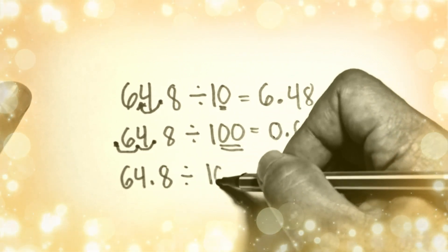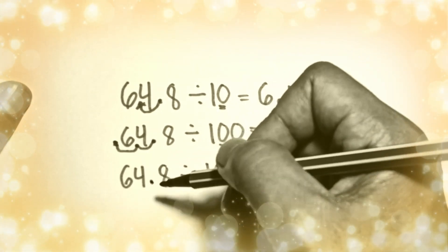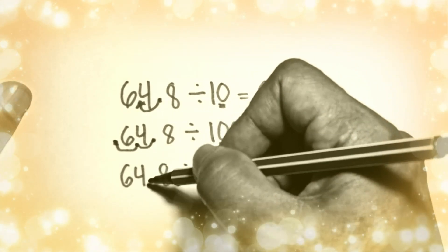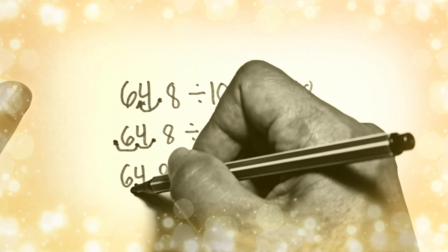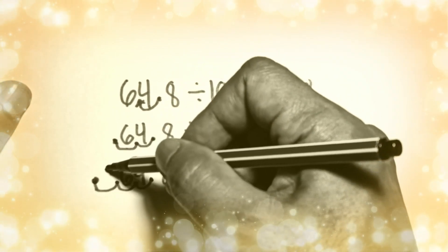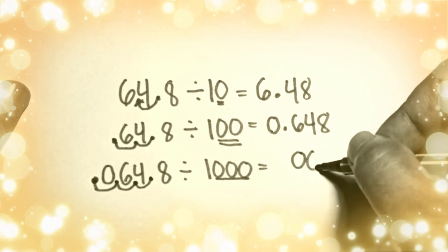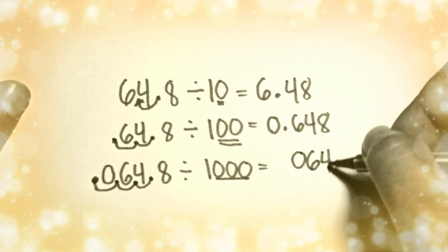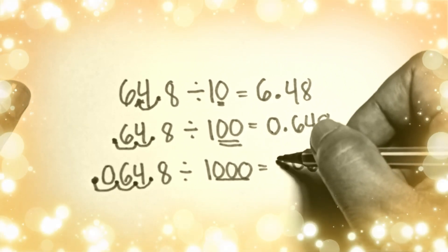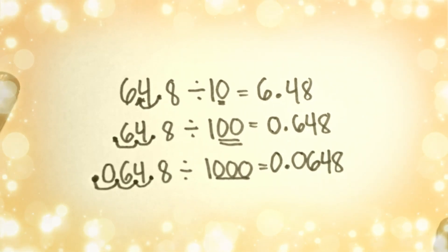Now if you are going to divide 64.8 by 1000, in 1000 you have three zeros, so you move your decimal point three times going to the left — one, two, and three. You just add a zero in there, and your answer is 0.0648.